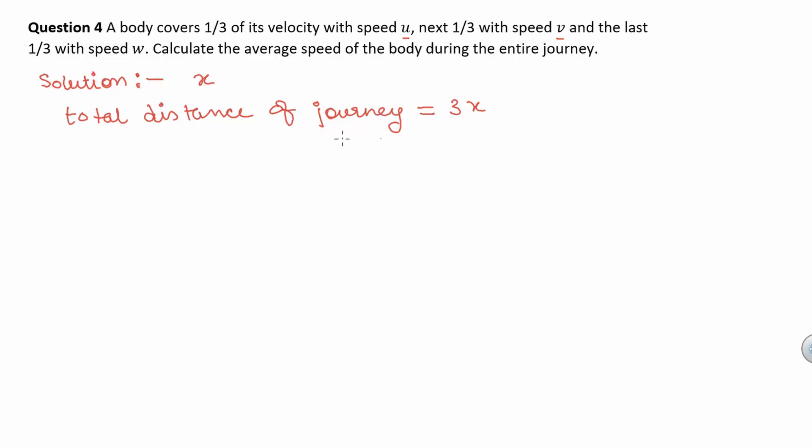We have total distance travelled in the journey. Now we have to find the total time taken to cover the journey. Total time equals x by u plus x by v plus x by w, which equals x times vw plus uw plus uv, all over uvw.